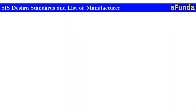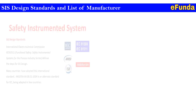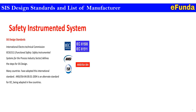SIS design standards and list of manufacturers: so far we have covered risk reduction and layers of protection, Safety Instrumented Function, Safety Instrumented System, and understanding of SIL and PFD. The key standards governing Safety Instrumented Systems are IEC 61508, IEC 61511, and ISA S84 — these define the requirements for designing and implementing SIS.